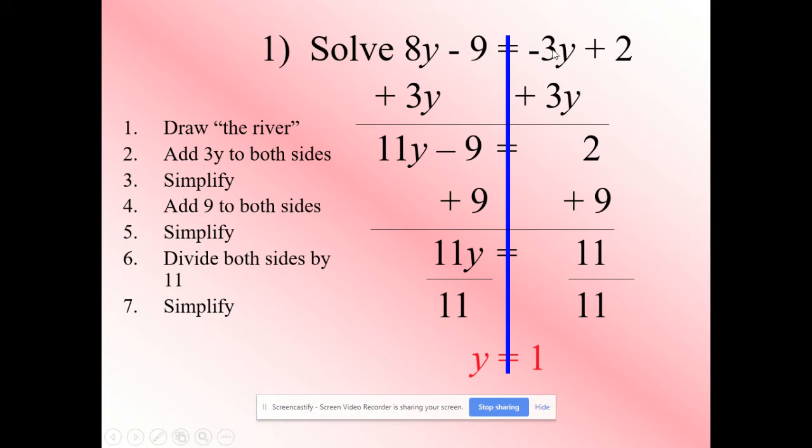Remember when you bring it over you need to do the opposite of what it is. So if that was a positive 3y you would then take 3y. So whatever it is, if it's positive it's not going to have a sign there. If it doesn't have a sign there you're going to take it. If it's got a sign there you do the opposite.